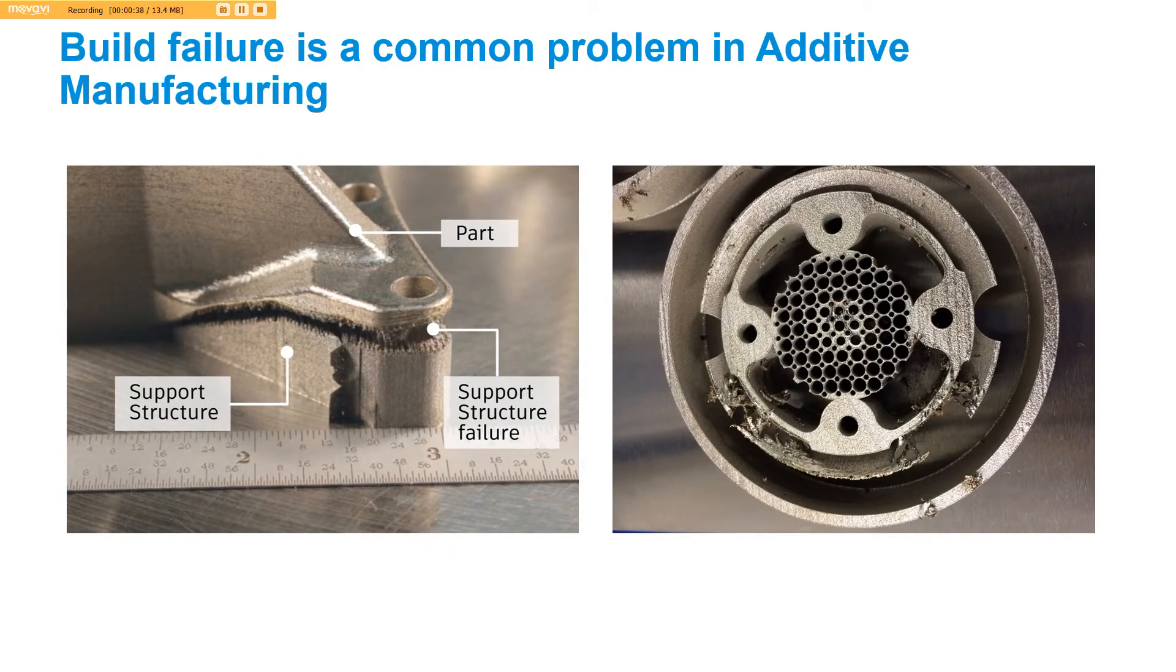When we started developing NetFab Simulation, the goal was to predict any common failure mode brought upon by excessive distortion or residual stress. This is an example where a part actually distorted to the point that it delaminated from its support structure and the build failed. Here's another part that distorts upward through the top of the powder bed and gets hit by the recoater blade when it goes to rake a new layer of powder. That part got ruined as well.